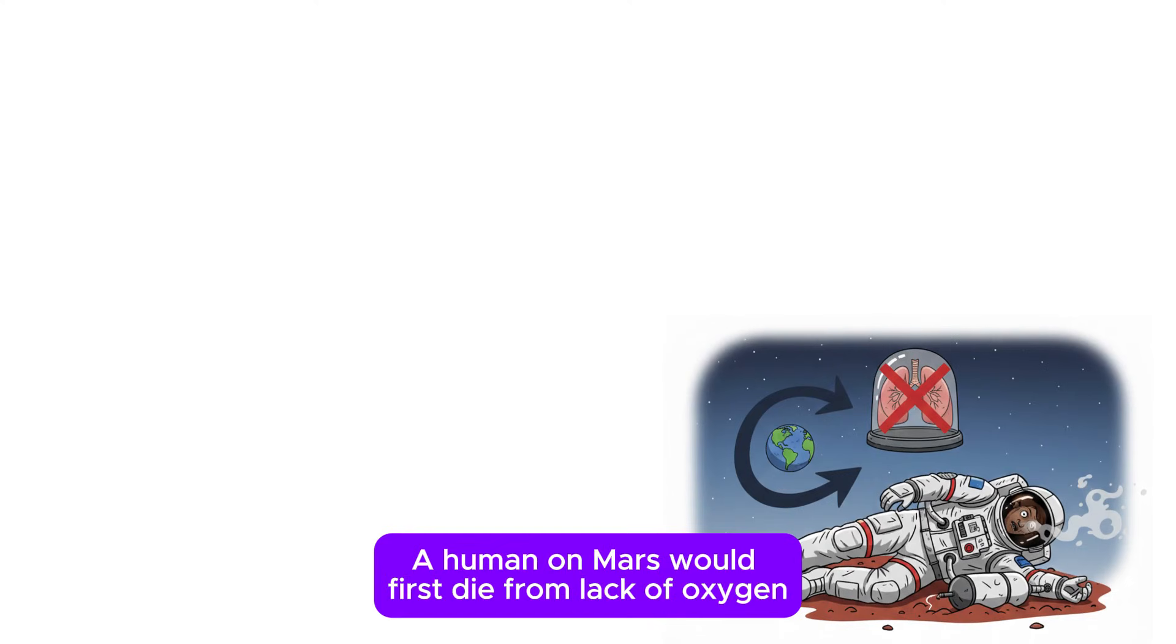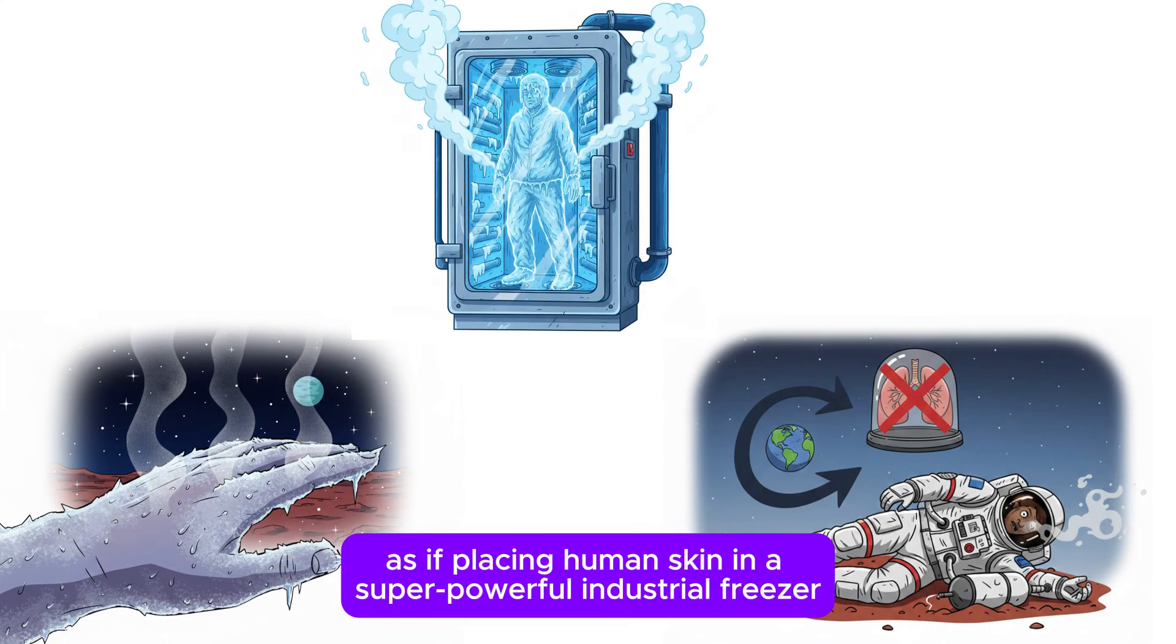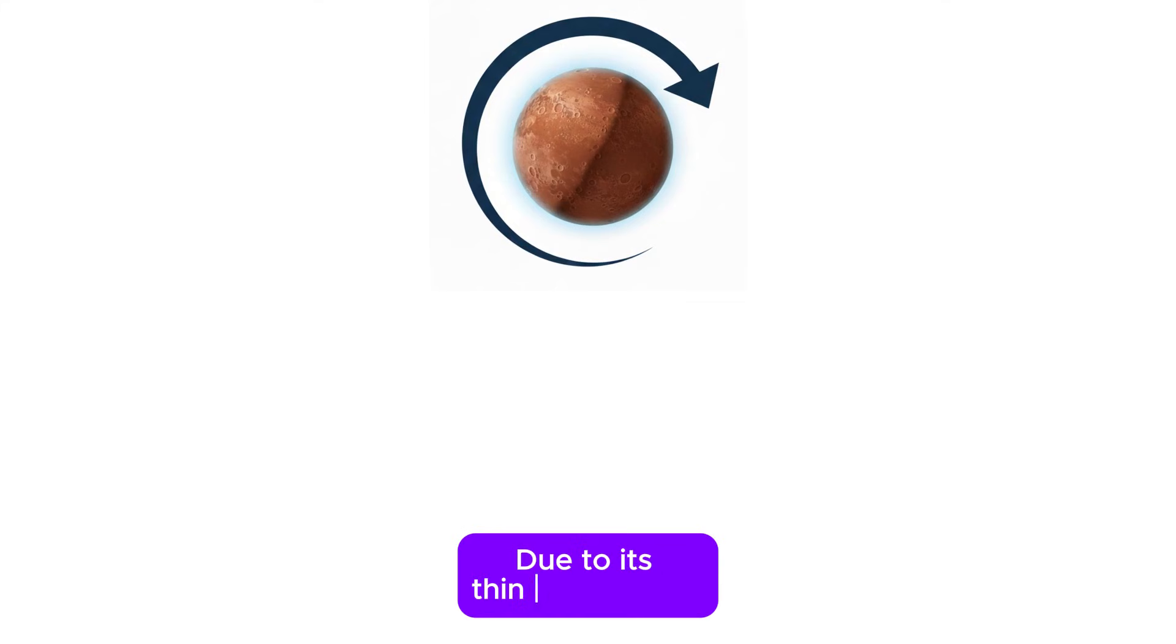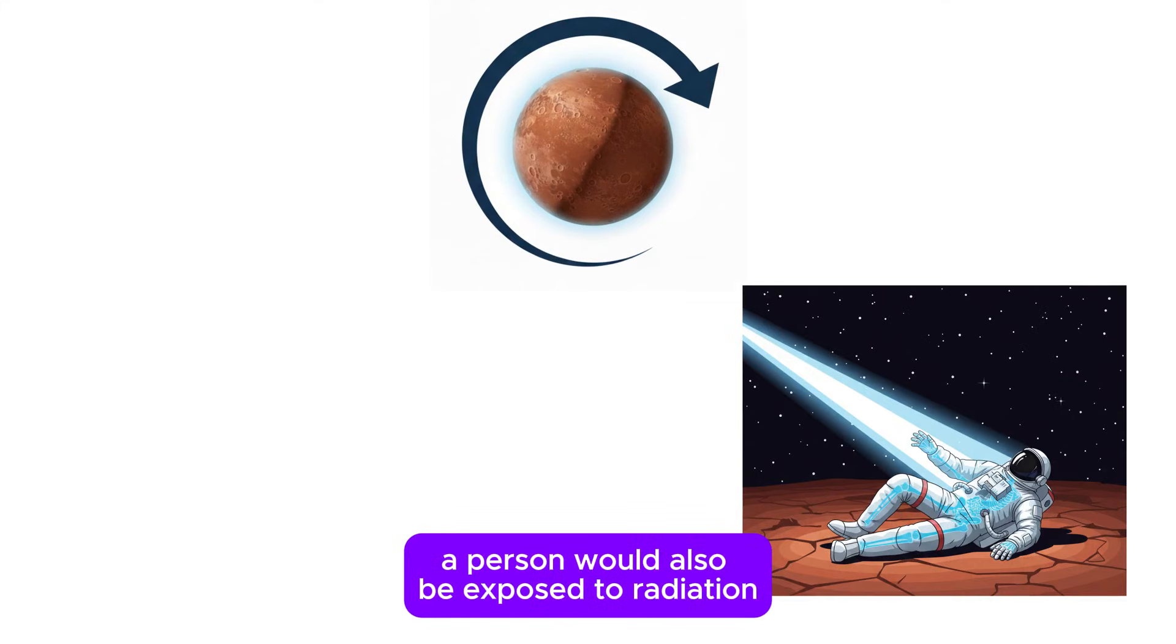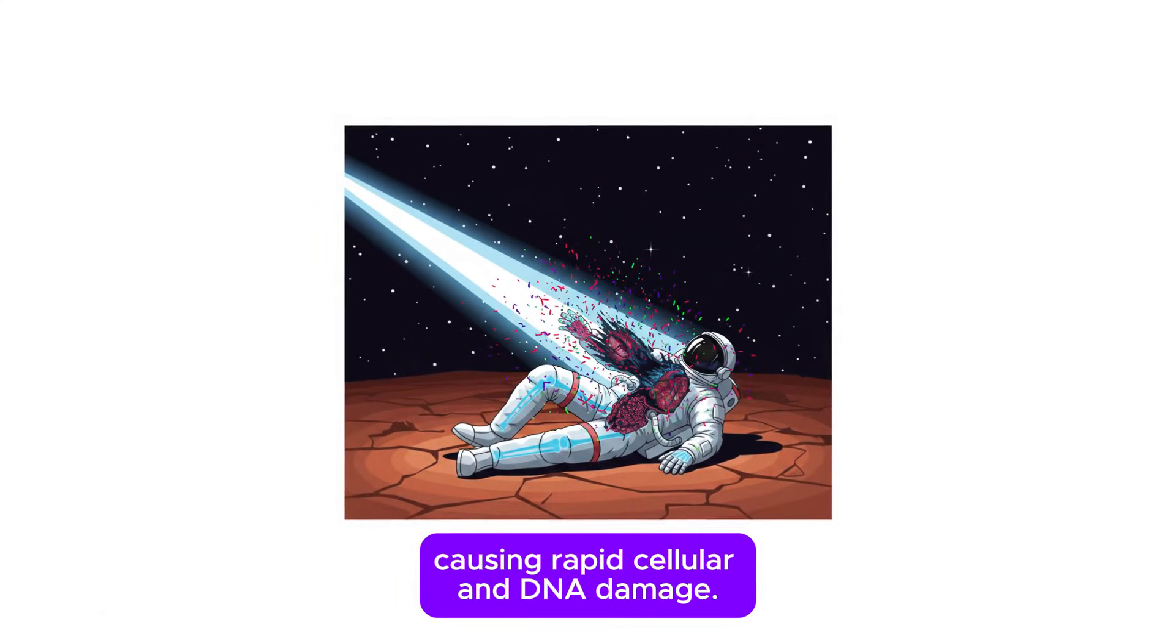A human on Mars would first die from lack of oxygen, then the extreme cold would rapidly freeze exposed tissues, as if placing human skin in a super powerful industrial freezer that freezes objects in seconds. Due to its thin atmosphere, a person would also be exposed to radiation equivalent to dozens of strong medical x-rays in a single day, causing rapid cellular and DNA damage.